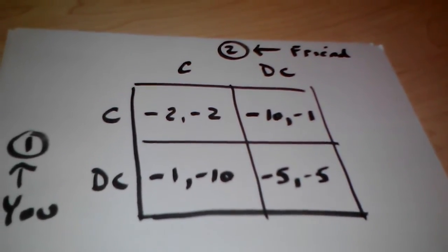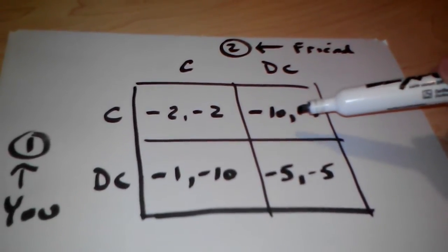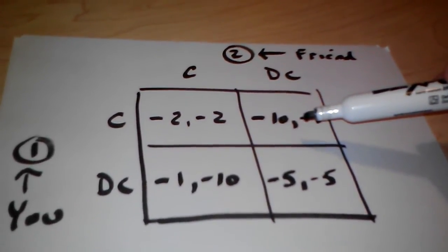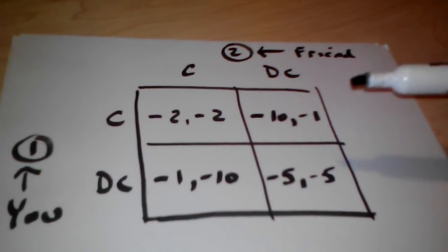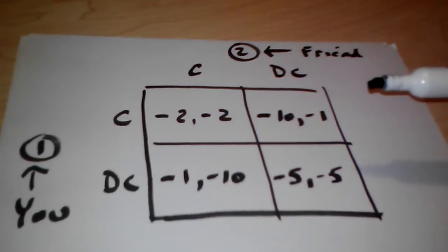So before I show the steps in solving the game, let me just say one thing about the payoffs. To the left of the comma is going to be player one's payoffs. To the right of the comma is going to be player two payoffs.